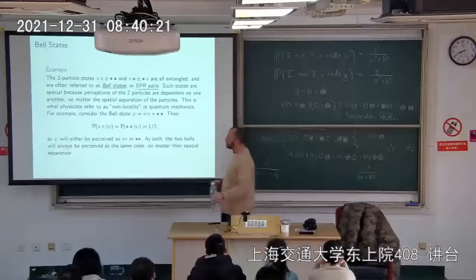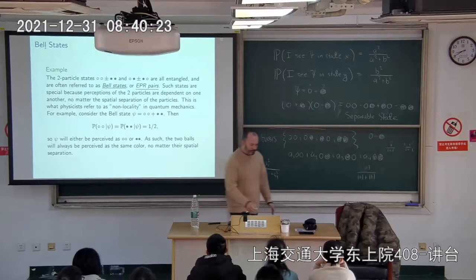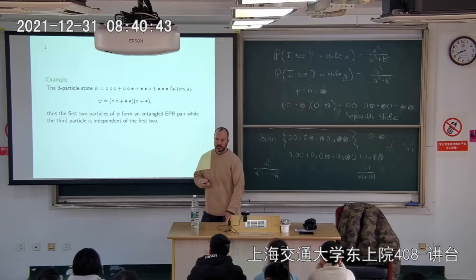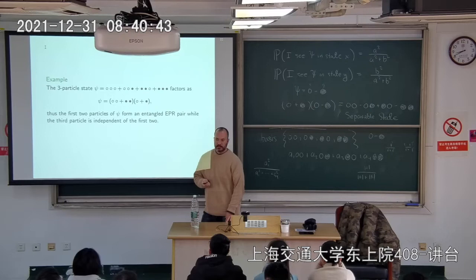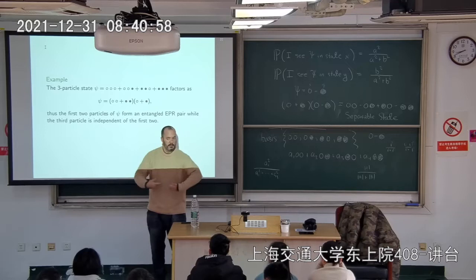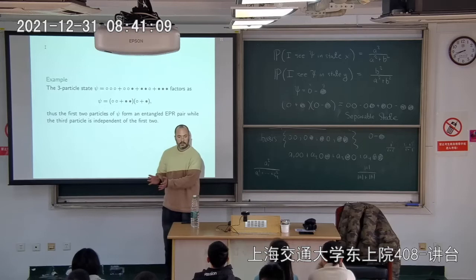Here's an example of a three-particle state: white-white-white + white-black-black + black-white-black + black-black-white. This has a factorization into a degree-two factor and a degree-one factor, so it's not fully separable. This means the first two particles are entangled — they're spinning together — while the third particle is independent of the other two.